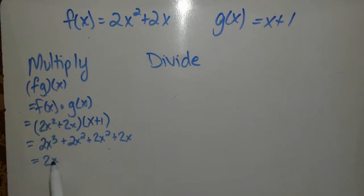Combine your like terms, 2x cubed plus 4x squared plus 2x will be my answer. For division,